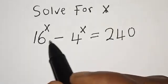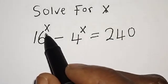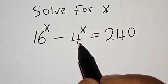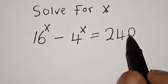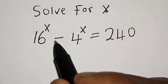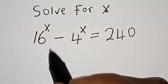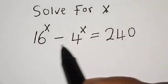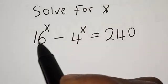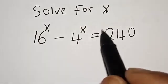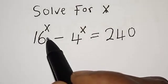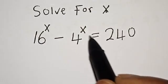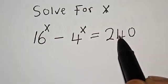Solve for x: 16 raised to power s minus 4 raised to power s is equal to 240. Hi everyone, welcome to my class. In this class we want to find the value of s from this given exponential equation: 16 raised to power x minus 4 raised to power s is equal to 240.